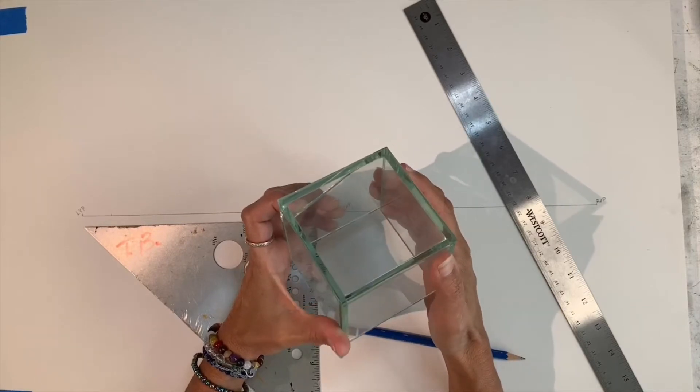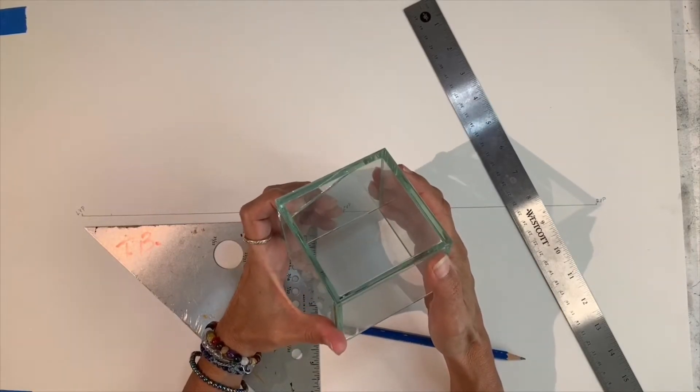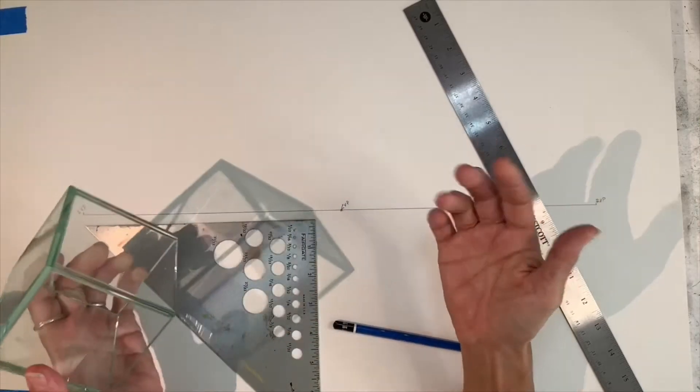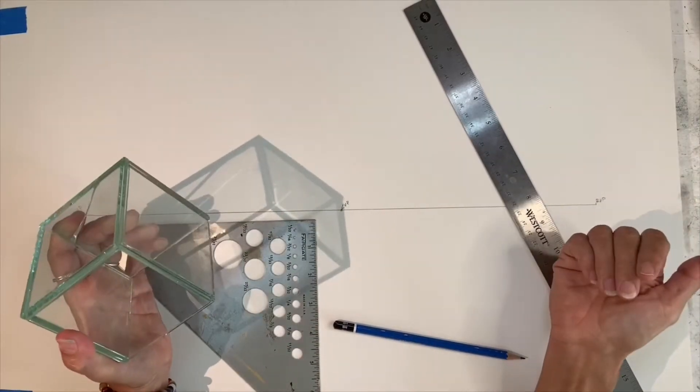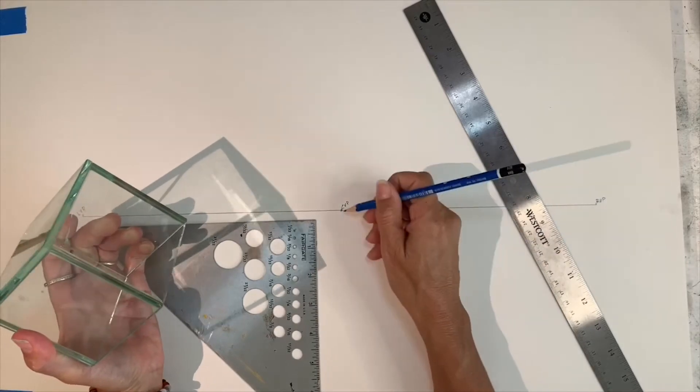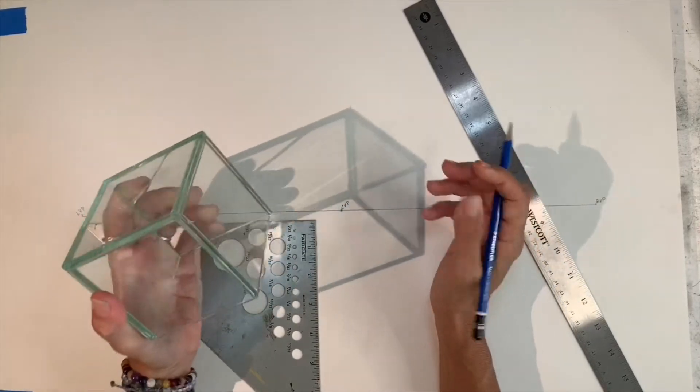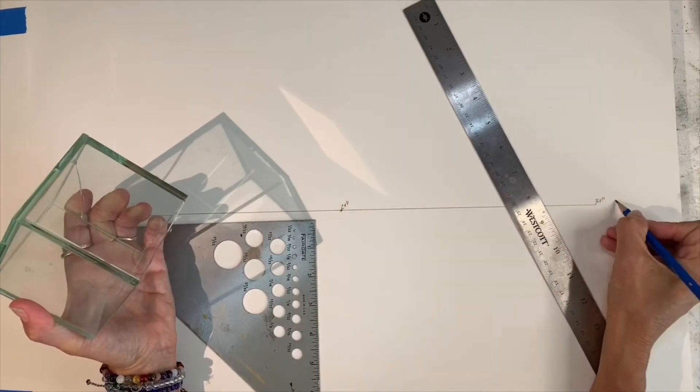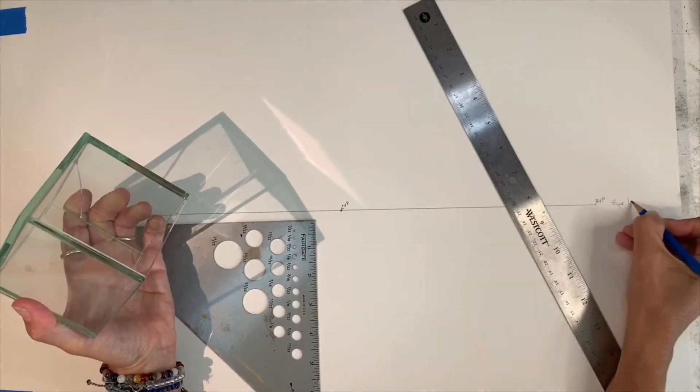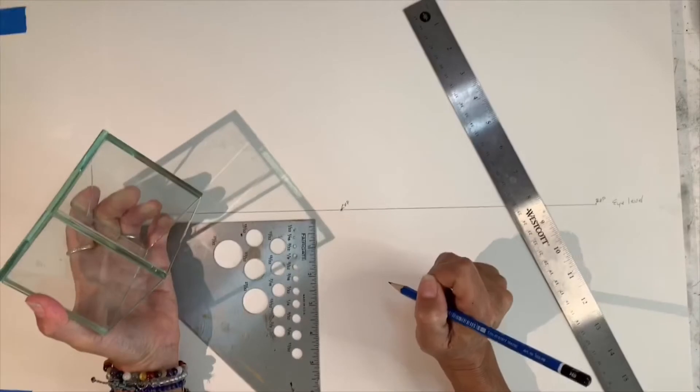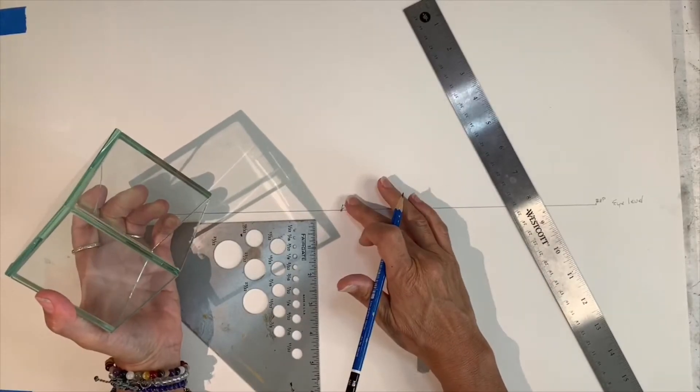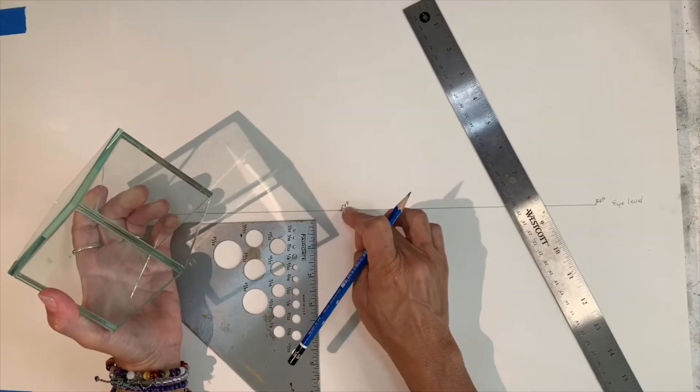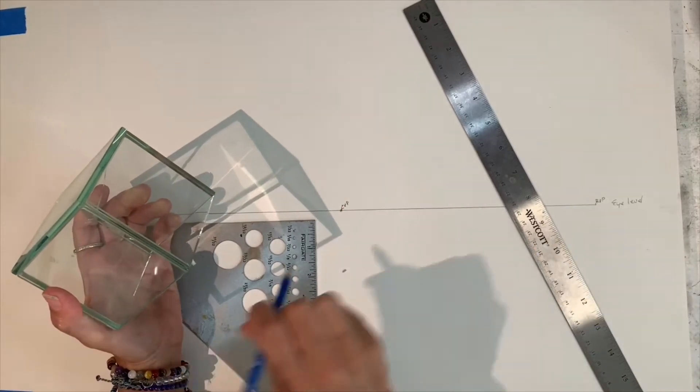When we are talking about one-point perspective, we are dealing with a horizon line and a central vanishing point. So the horizon line is basically your eye level, and your central vanishing point is basically wherever you're standing. That's where your vision goes to. That's where everything converges.